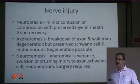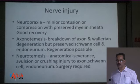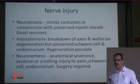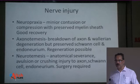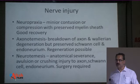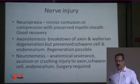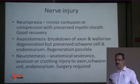There are three grades of nerve injury. The first and least severe is neuropraxia, where there is minor contusion or compression with a preserved myelin sheath — it usually has very good recovery. Then axonotmesis involves partial breakdown of the axon and myelin degeneration, but with preservation of Schwann cells and endoneurium, so moderate nerve regeneration is possible.